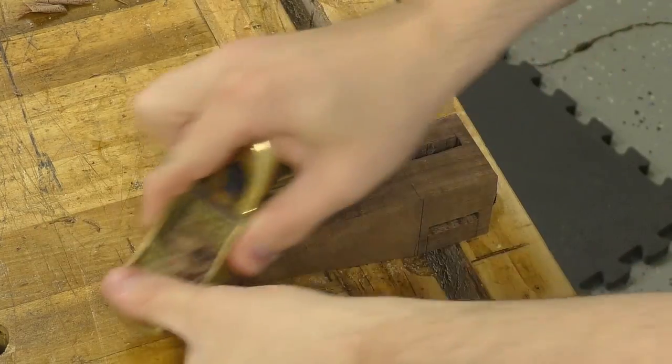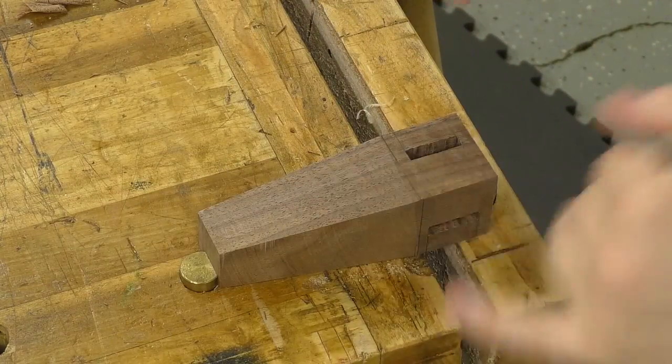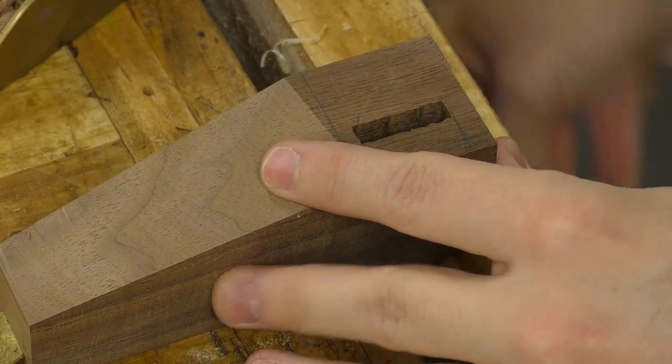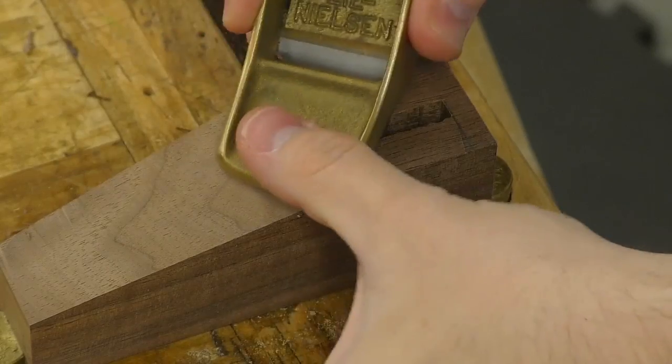After using the disc sander, I switched over to my block plane to clean up the tapers. After I got the first side looking good, I rotated the foot and then used the block plane to clean up the other side, making sure to get the shoulders to match up.